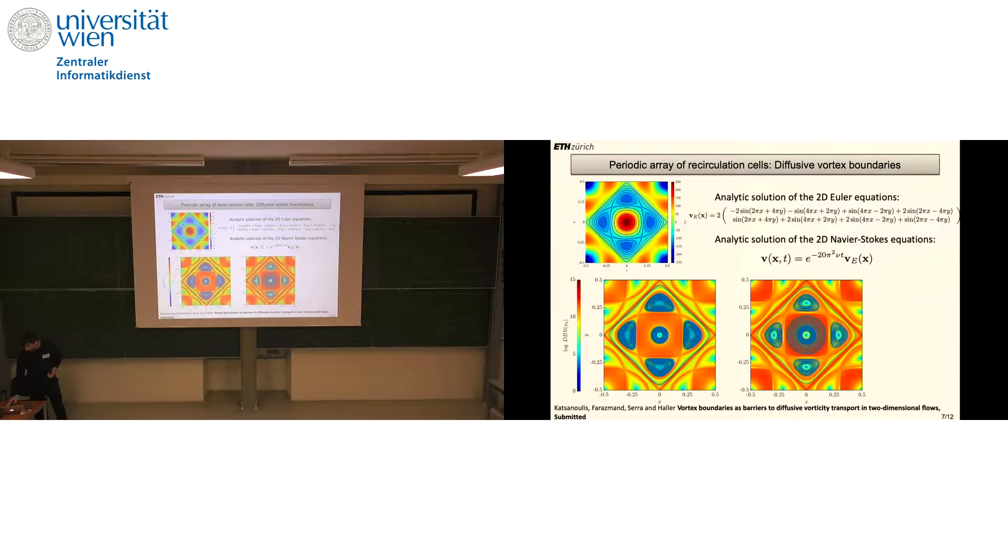After we ran our algorithm on that velocity field, this is what we extracted for two different time intervals. We were able to extract not only the vortical structures in here, but also structures closely aligned with the outermost network of heteroclinic connections.